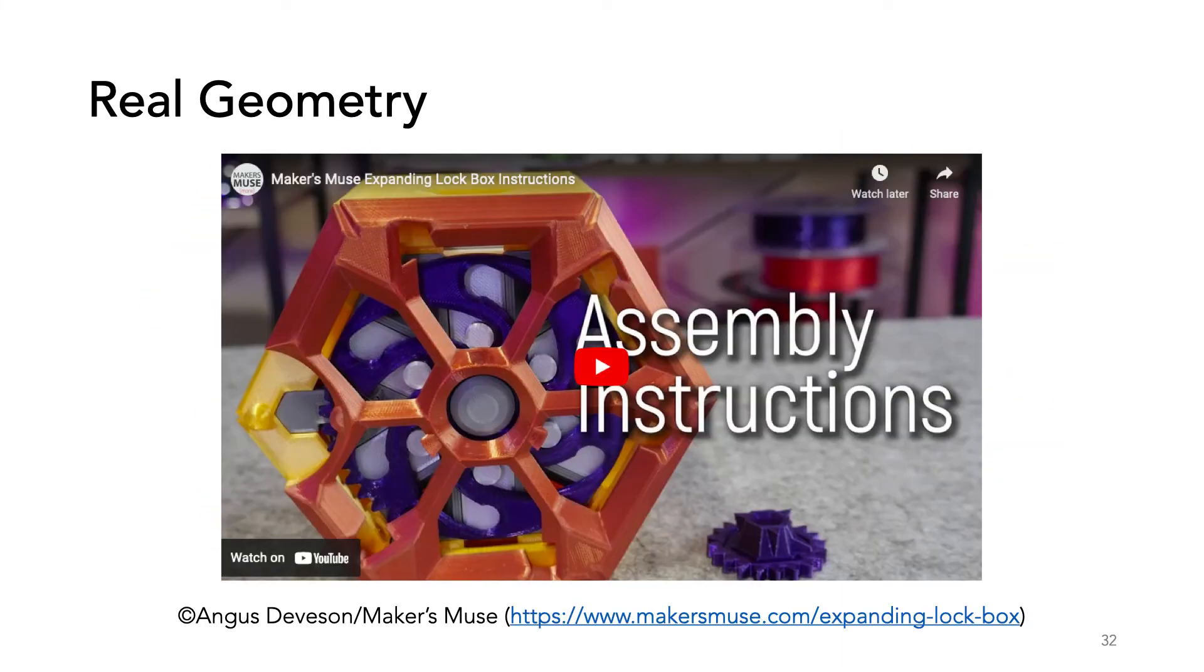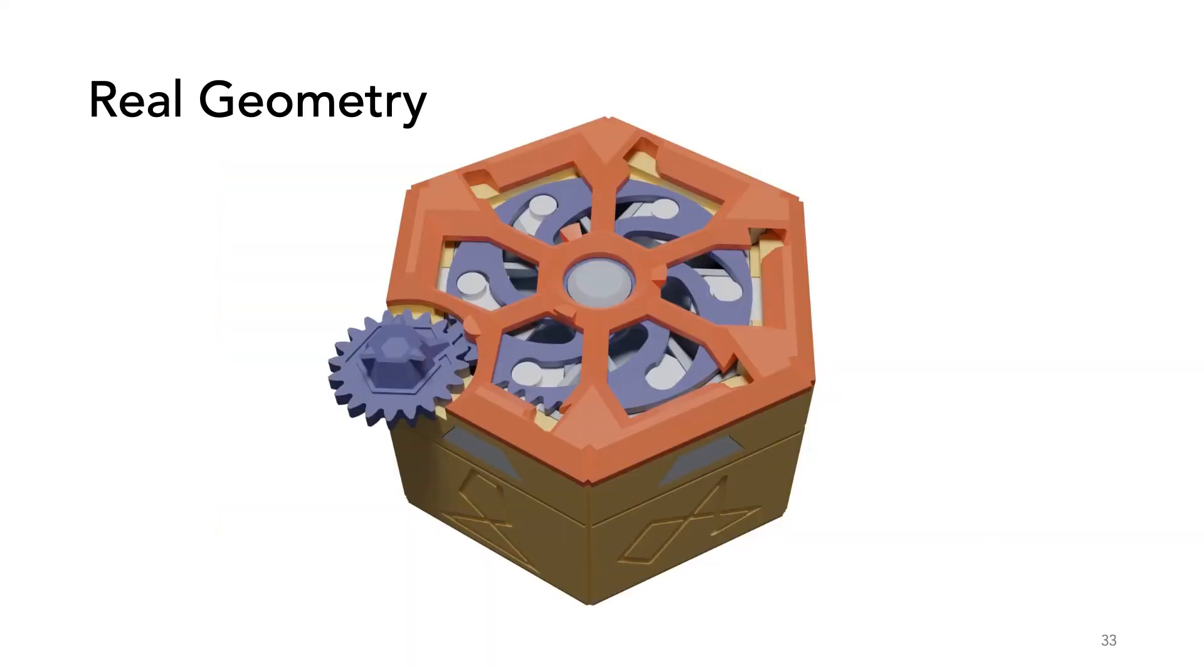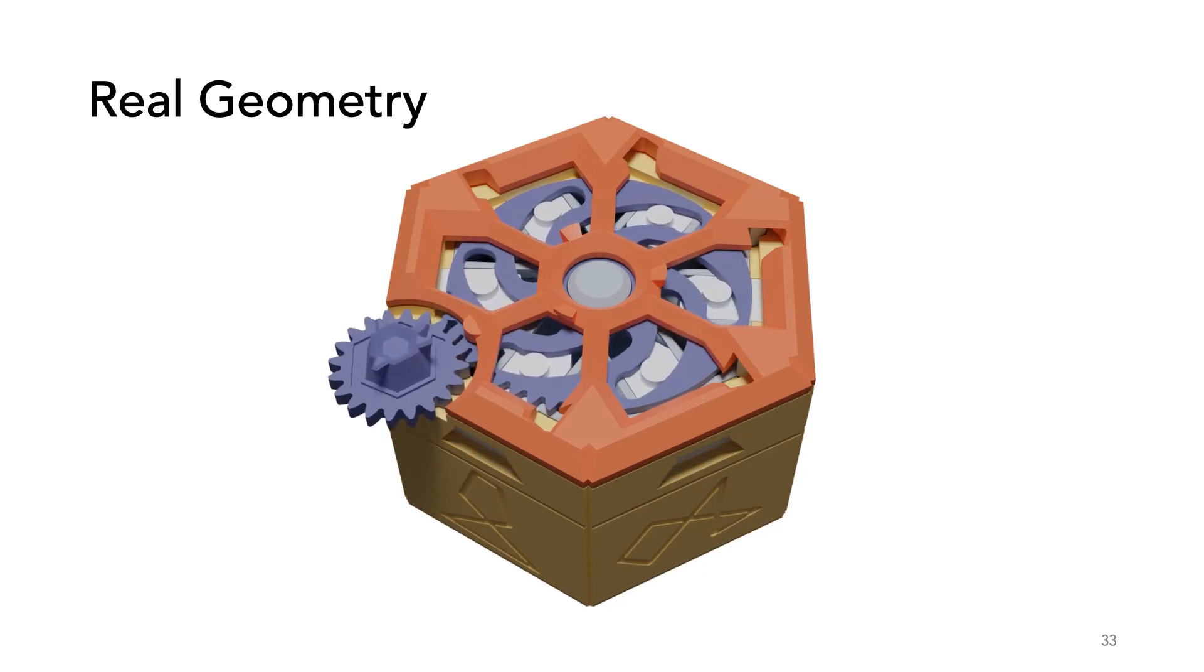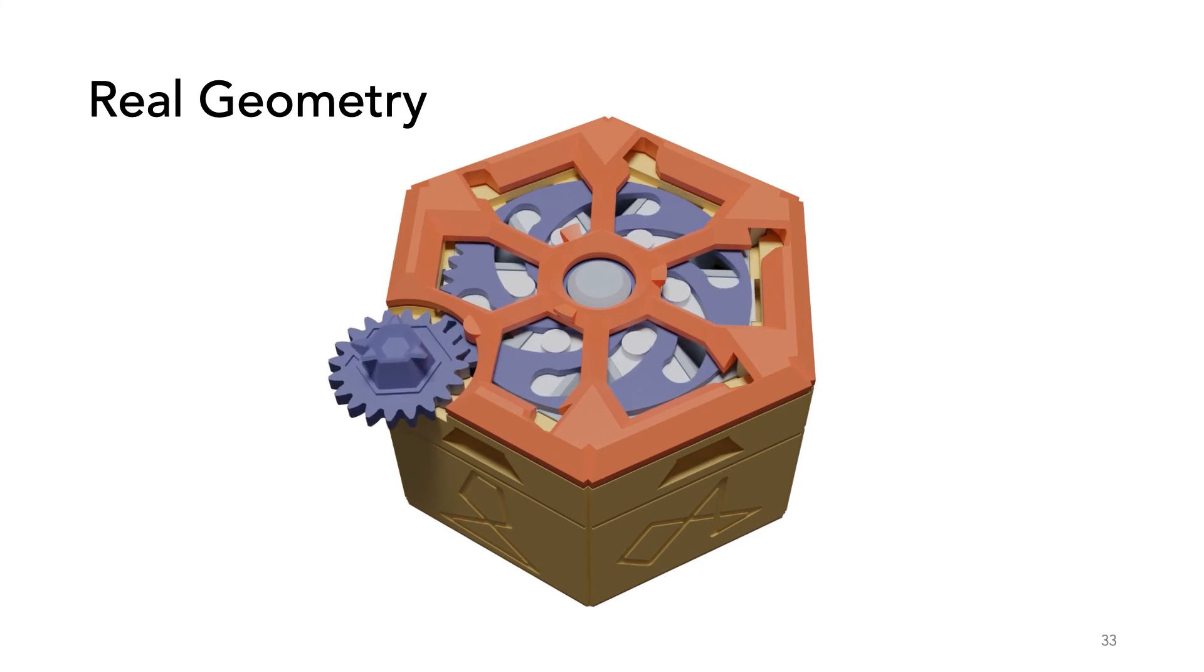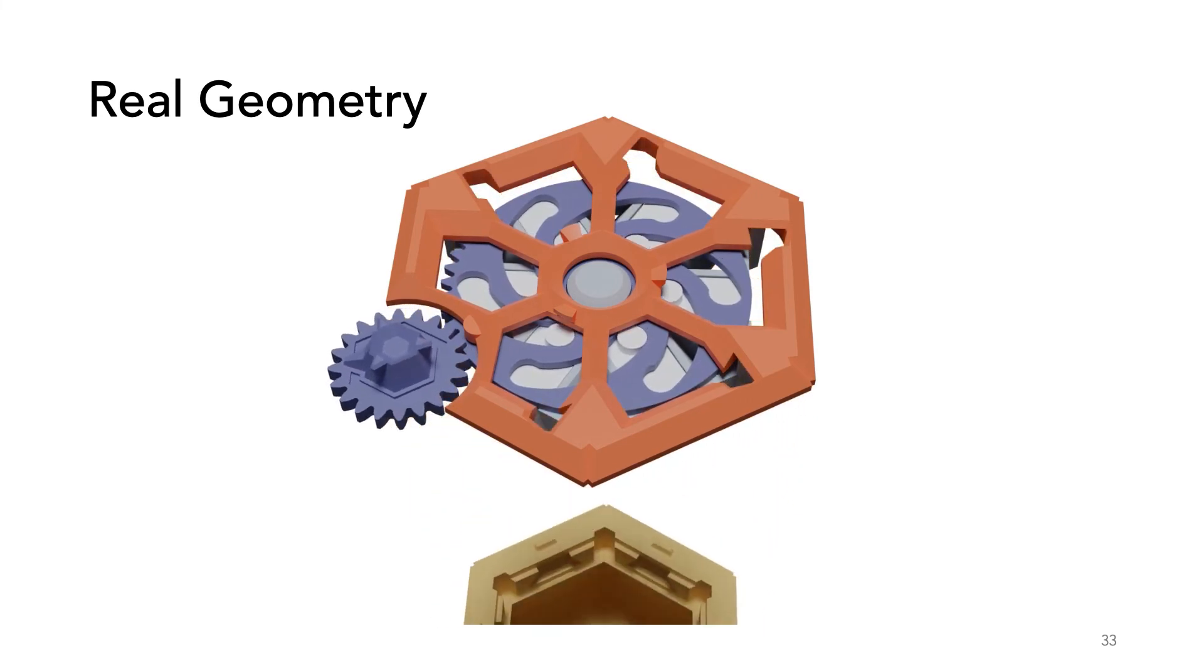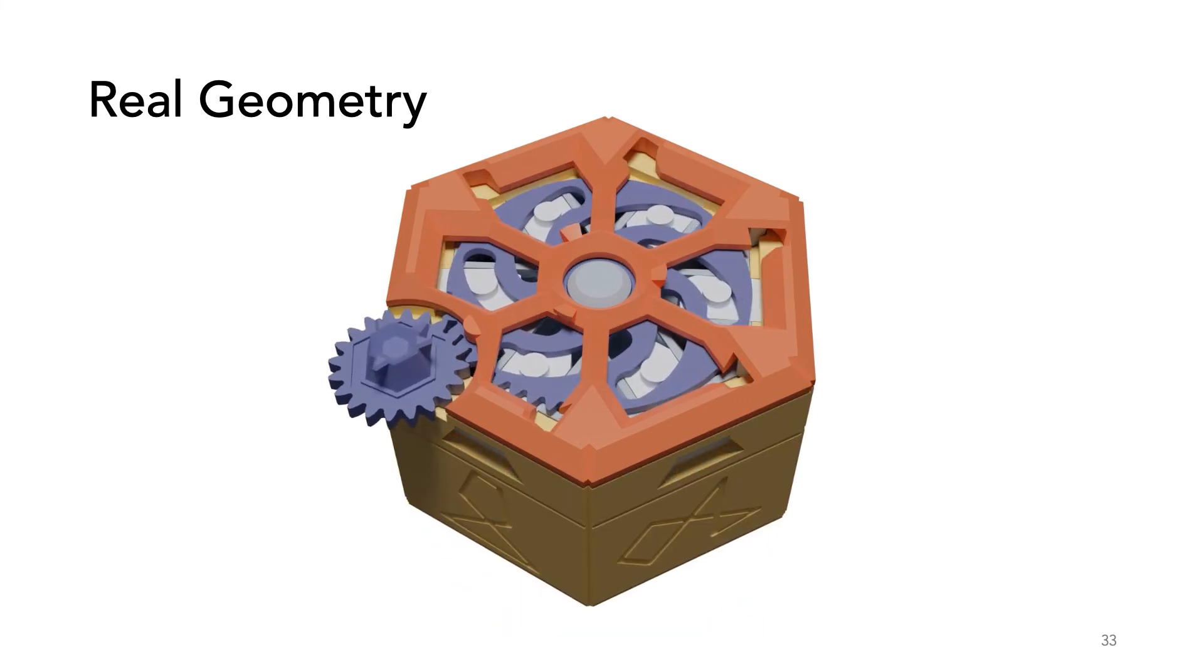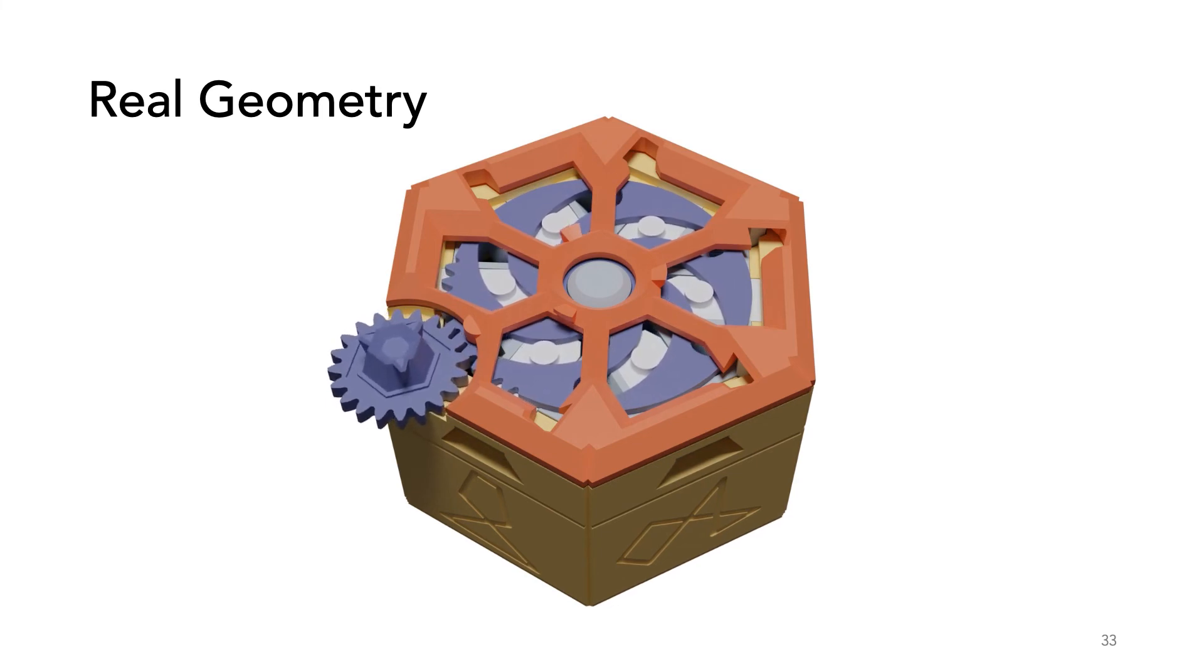An application of our work is the virtual testing of mechanical parts before manufacturing. To test this, we found this great model for 3D printing by Angus Stepson of the Maker's Muse YouTube channel. It is an intricate lockbox with many tight-fitting parts. We download the parts and directly simulate them. You can see as the key turns, this causes the pins to be pulled in by the curved path in the middle. When the pins are completely pulled in, the box is unlocked and the bottom is free to fall under gravity.